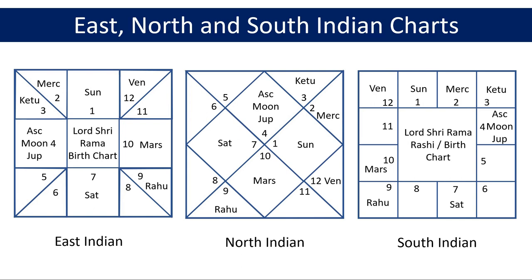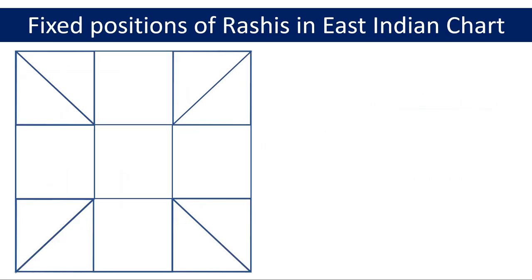Let's now focus on the positions of zodiac signs or Rashis in the East Indian chart. What you see on the screen is an East Indian chart. The square in the middle is typically used to provide information such as the name of the person who this chart belongs to and the type of the chart, for example Rashi chart in this case.